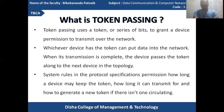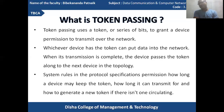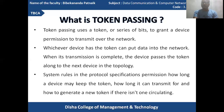Token passing uses a token or series of bits — a message converted into 0s and 1s — to grant a device permission to transmit over the network. Whichever device has the token can put data into the network. When its transmission is complete, the device passes the token along to the next device. This depends on the protocol of the subsequent particular network.